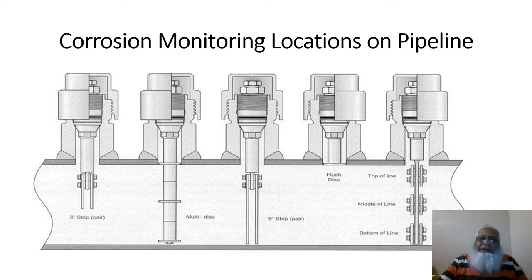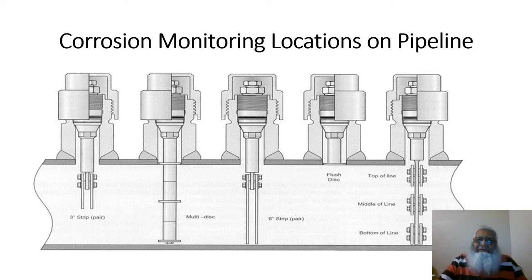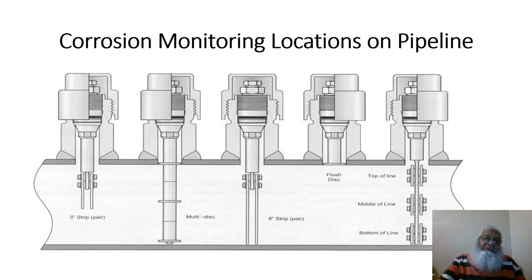Ladder coupons place more than one coupon on the same system, covering the top, middle, and bottom of the line. Installation of these devices is critical for both piggable and non-piggable lines, and in determining the subsequent impact of these devices on pigging and the downstream of the lines. The actual orientation of these coupons is very important.